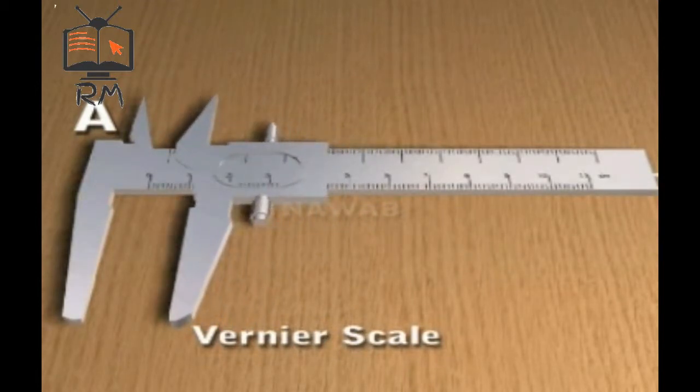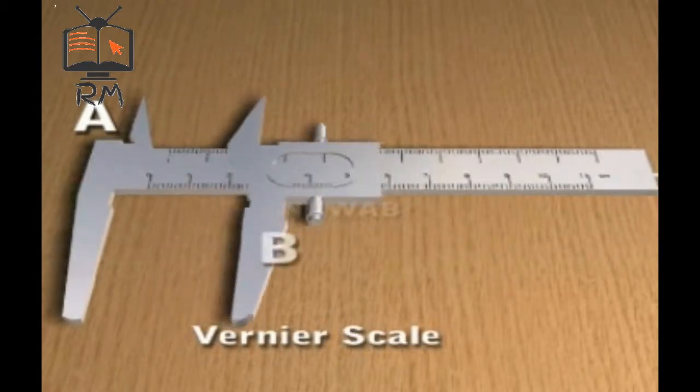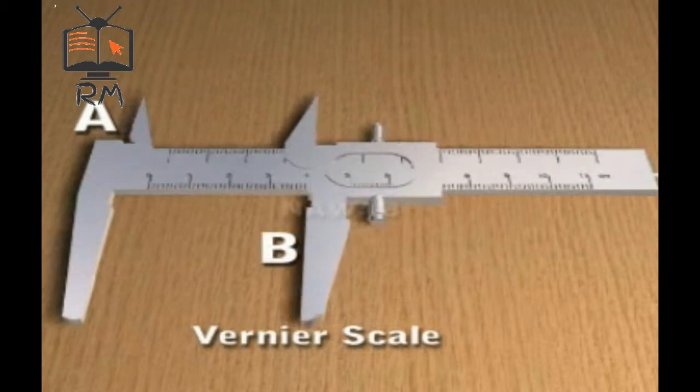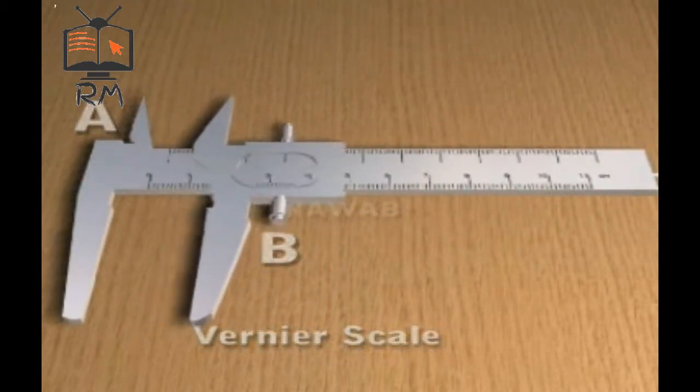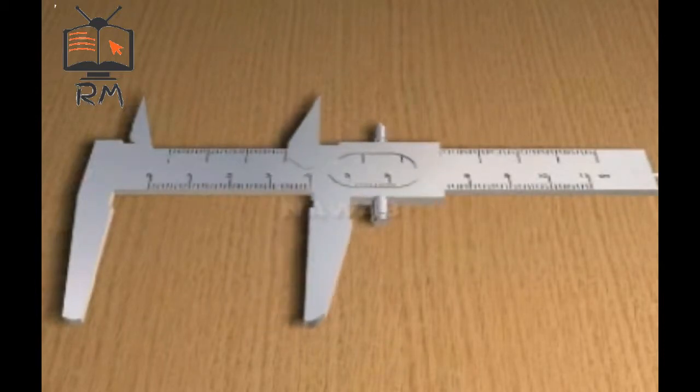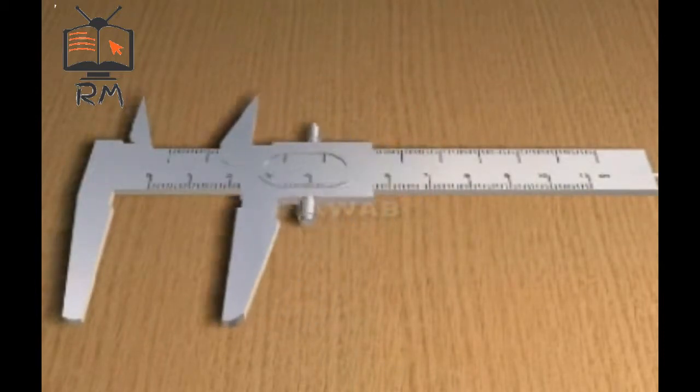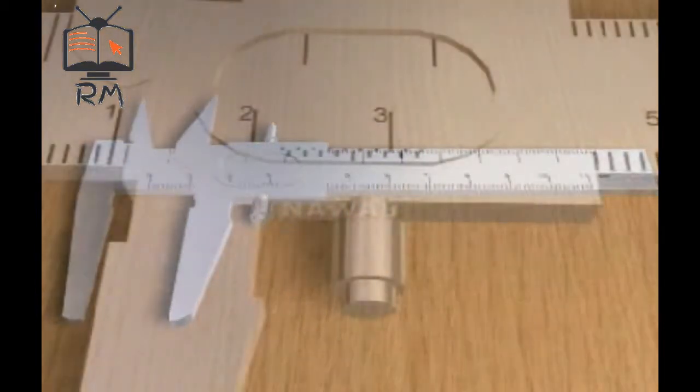The second part of Vernier Calipers consists of a Vernier Scale which contains jaw B on its left end. This jaw moves forward or backward when Vernier Scale is moved, whereas jaw A does not move. Vernier Scale can be moved forward or backward on the main scale.